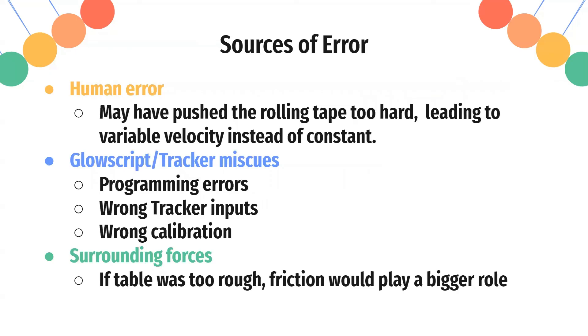And some sources of error, as I mentioned, the human error of me rolling the tape too hard, leading to variable velocity instead of constant. This is my first time using Glowscript and Tracker, so there could be some programming errors, some wrong calibration errors. Of course, there's surrounding forces such as if the table is too rough, friction will play a bigger role than on a smooth surface.